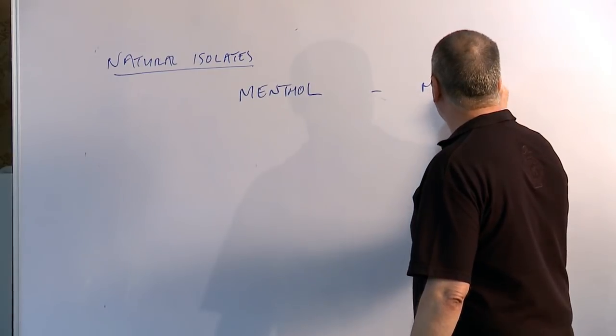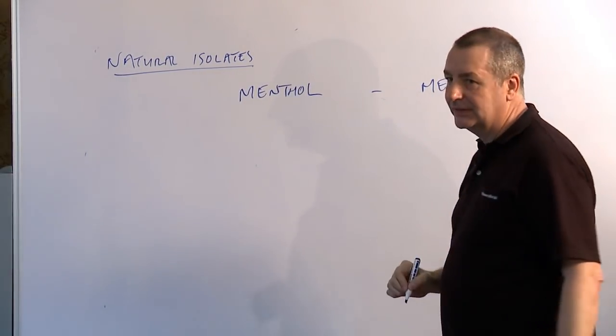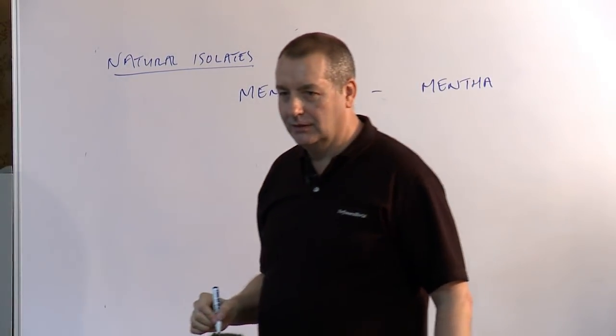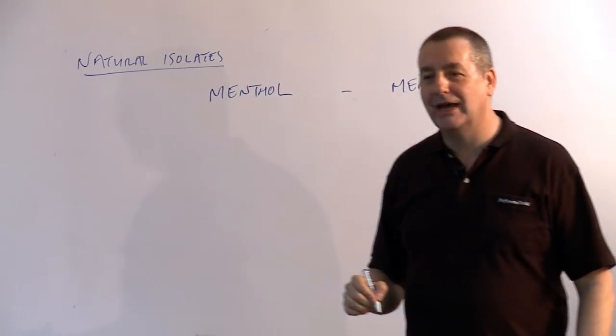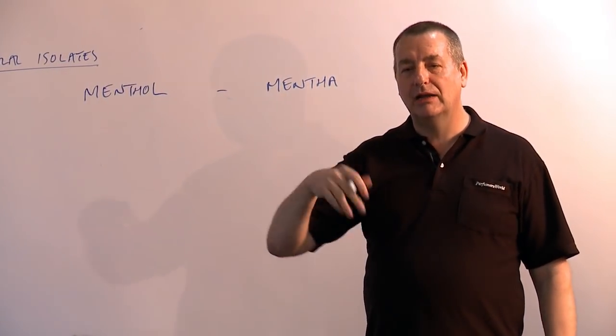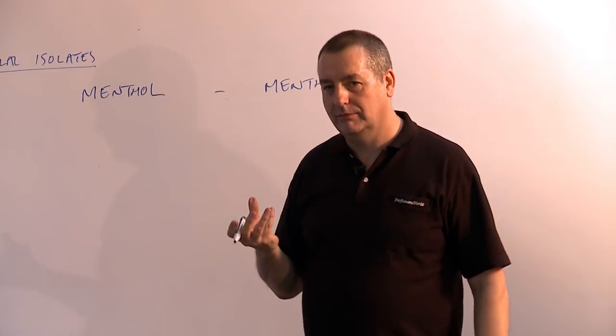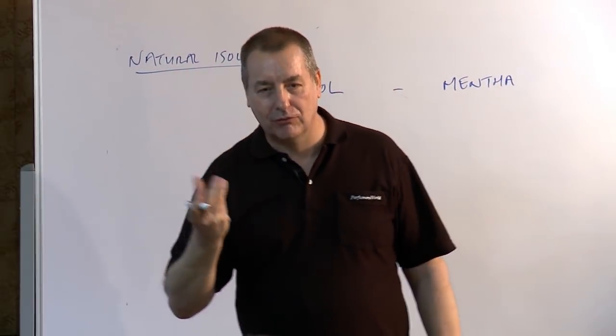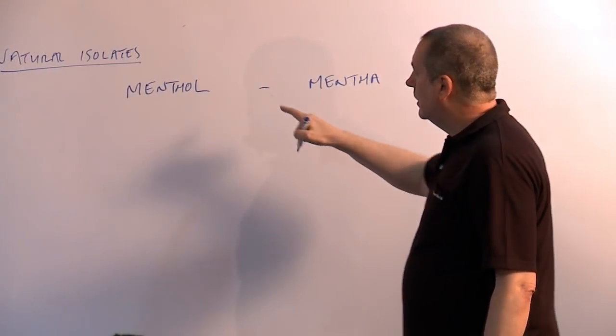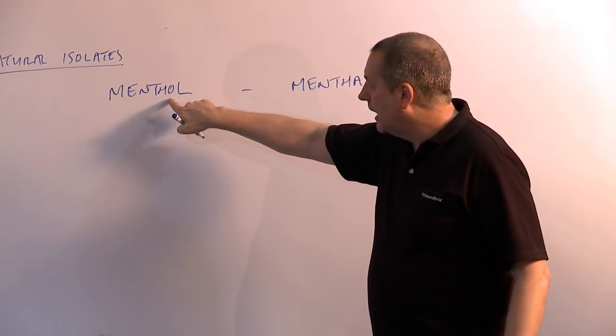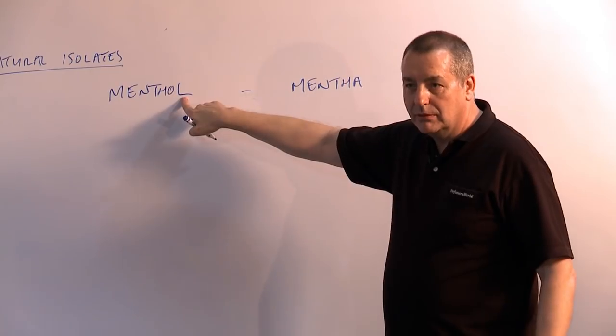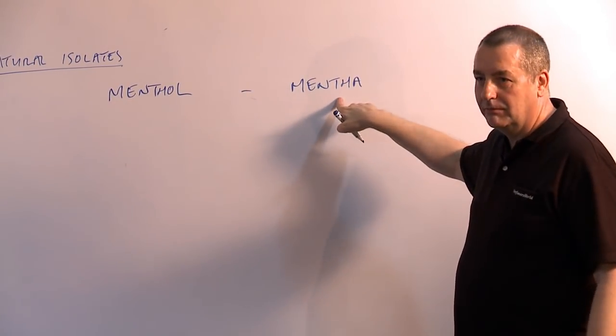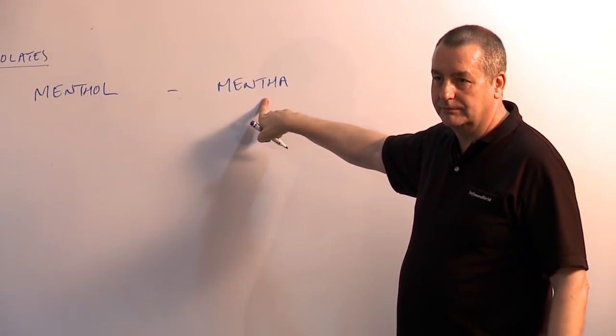Menthol from mint, which is the mentha species. The reason I did that was because ol on the end of a chemical name usually means it's what? It has an alcohol group. So menthol is the alcohol group found in mentha. So that's your first touch on chemistry.